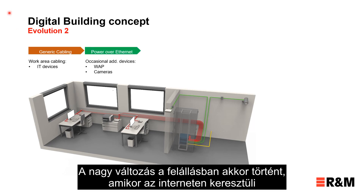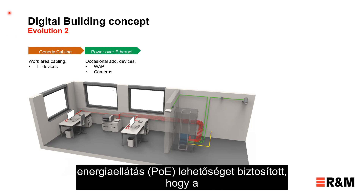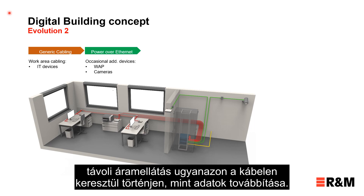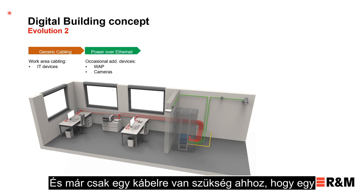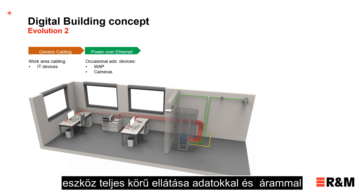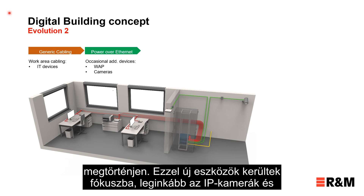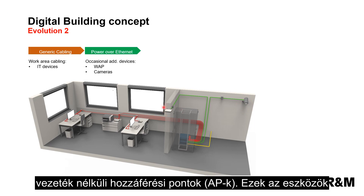The big change to this setup happened when Power over Ethernet provided the possibility to deliver remote power via the same cable as data. Only one cable is now necessary to completely supply a device with data and power. With this, new devices came into focus, most notably IP cameras and wireless access points.